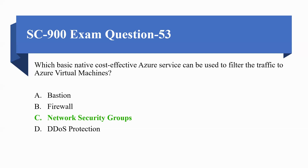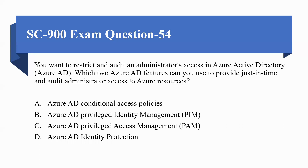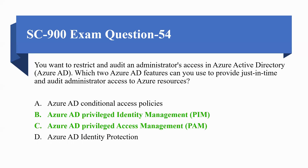Next question: you want to restrict, audit, and manage administrator access in Azure Active Directory. Which two Azure AD features can you use to provide just-in-time and audited administrator access to Azure resources? A) Azure AD Conditional Access Policy, B) Azure AD Privileged Identity Management, C) Azure AD Privileged Access Management, D) Azure AD Identity Protection. Correct options are B, Azure AD Privileged Identity Management, and C, Azure AD Privileged Access Management.